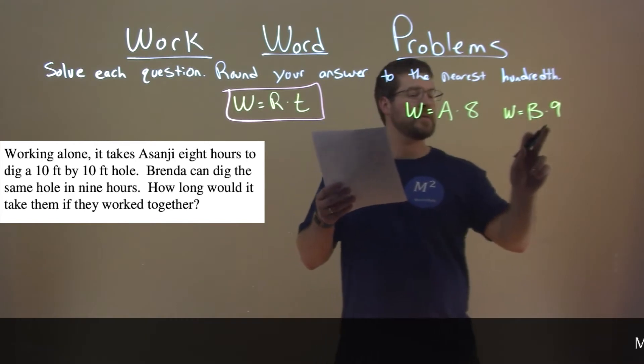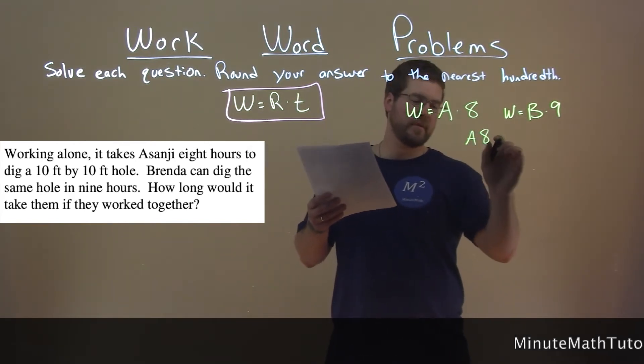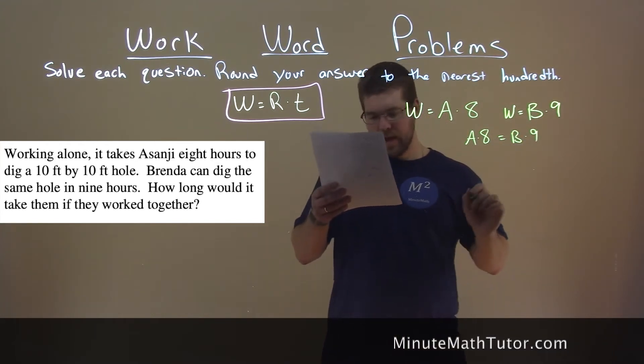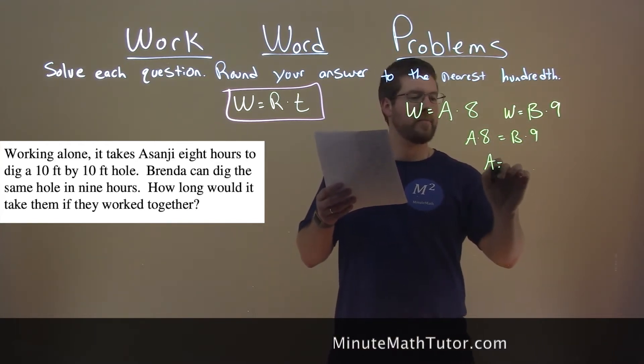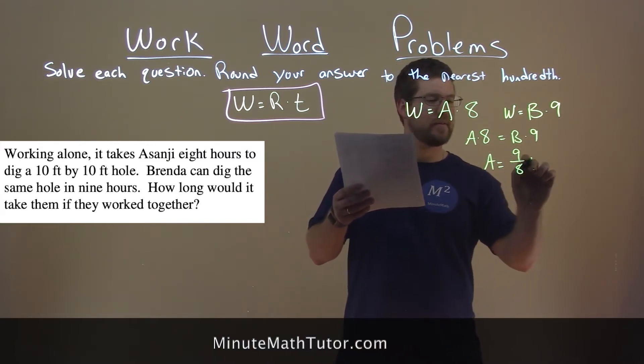We can set them equal to each other because they're both equal to W. And we have 8A equals 9B. A by itself, divide both sides by eight, is nine-eighths B.